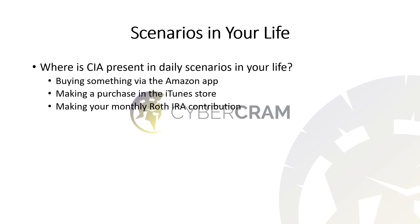Given these two scenarios, I think this gives you something to consider regarding confidentiality, integrity, and availability. I think it's important to consider where CIA is present in the daily scenarios in your life. Something as simple as buying something via the Amazon app, buying via the iTunes Store, or making a monthly Roth IRA contribution — confidentiality, integrity, and availability are present there and need to be. Consider those scenarios and others in your life. If you have questions, feel free to submit them in the comments. If you liked this video, hit the like button, subscribe, and I'll see you in the next video.